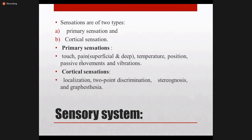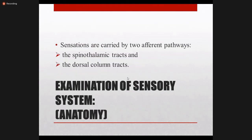Cortical sensations include localization, two-point discrimination, graphesthesia, and stereognosis — these are directly related to the cortex of the brain. Primary sensations are carried by the spinothalamic tract and dorsal column tract. The spinothalamic tract carries pain, temperature, and crude touch, while the dorsal column carries light touch, vibration, and position sense.